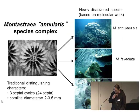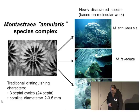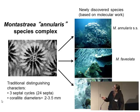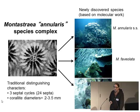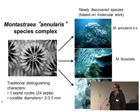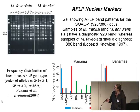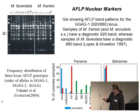Montastraea annularis species complex was long thought to be a single species on Caribbean reefs, but recent molecular work has shown that it consists of at least three species. You can generally, but not always, differentiate them on colony shape. Montastraea annularis sensu stricto is columnar in form. Montastraea faveolata tends to be massive with skirts that go off the edge of the colony. And Montastraea franksi tends to be smaller, slower growing, and has a bumpy morphology. The new molecular data consists of AFLP nuclear markers, which differentiate faveolata from the other two.